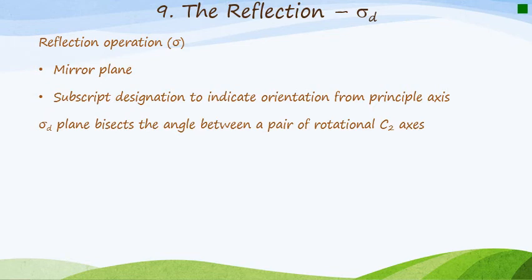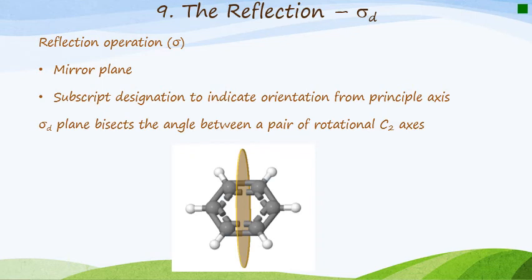You get a third reflection called a sigma d. This is a diagonal mirror plane, and it's used to indicate the orientation from the principal axis. So the sigma diagonal plane is going to bisect the angle between a pair of rotational C2 axes. So the best way to see this is with an example. So there would be a sigma d mirror plane. If I took that as a C2 axis, you can see that this half of the molecule can be rotated to that half of the molecule. There's also a mirror plane there, by the way. But if I show you the second C2 axis, which is that one there, then we have this mirror plane here is in between the two C2 axes. And it's called the sigma d.